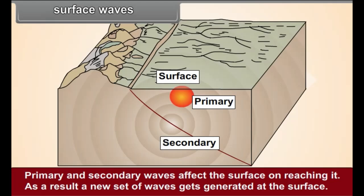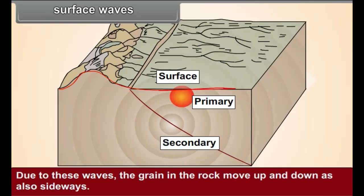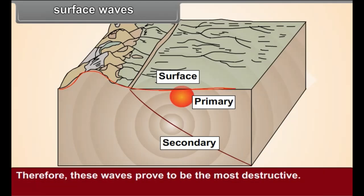Surface waves. Due to these waves, the grains in the rock move up and down, as also sideways. These waves spread along the circumference of the earth. Therefore, these waves prove to be the most destructive.